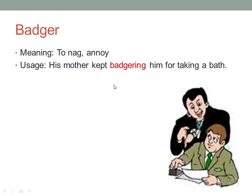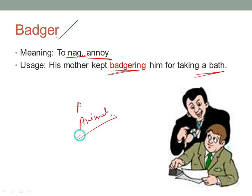The next word is 'badger'. Badger means to nag or to annoy. For example: 'His mother kept badgering him for taking a bath.' During lockdown, our mothers keep badgering us to take a bath every day. Badger is also an animal — a small black and white animal with white stripes that generally eats small insects.